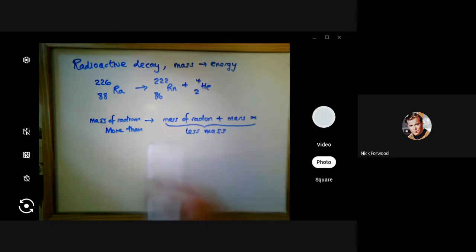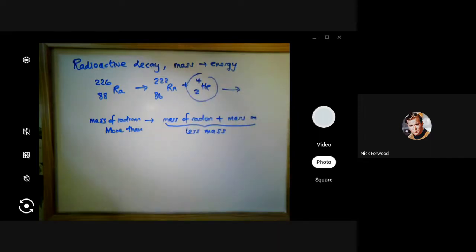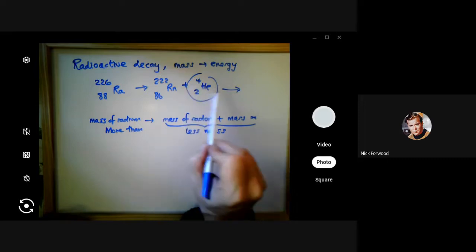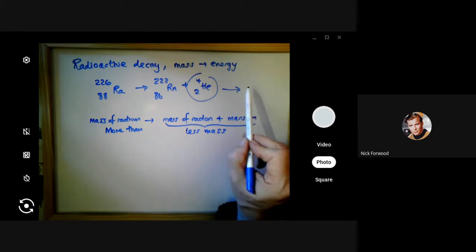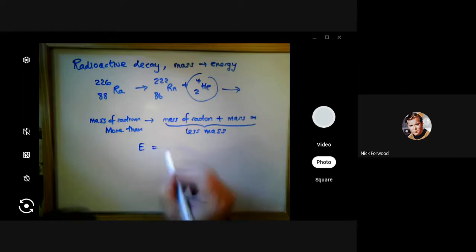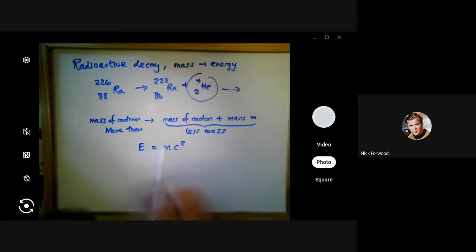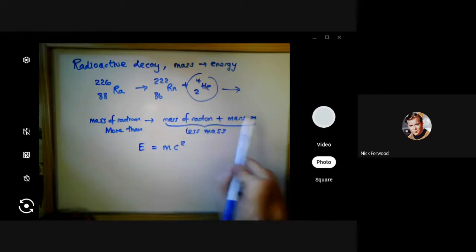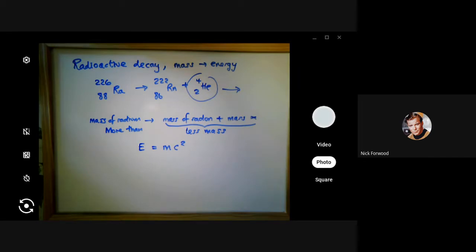That missing mass has been converted into energy — the kinetic energy of the alpha particle that is emitted. This is another great example of Einstein's famous formula. You can't get the alpha particle to come out at speed unless you get that kinetic energy from somewhere, and it comes from the difference in mass between where you started and where you finish. That difference in mass is converted into energy.